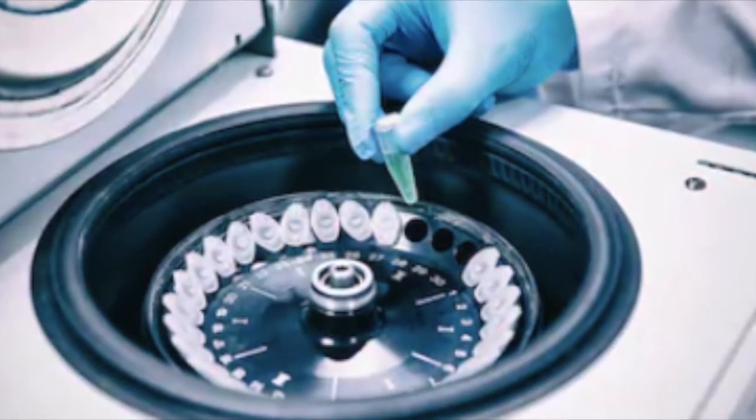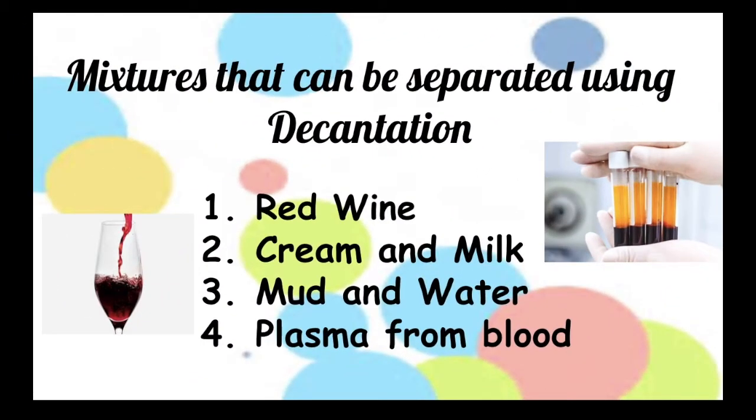Now that we've already learned the different process of decantation, let's take a look at what mixtures can be separated using this technique. We have here, first, red wine, cream and milk, mud and water, and plasma from blood.